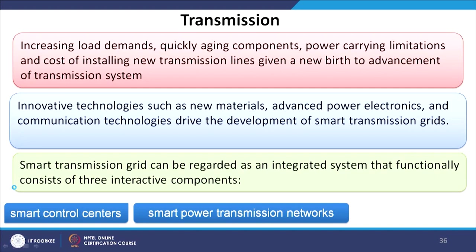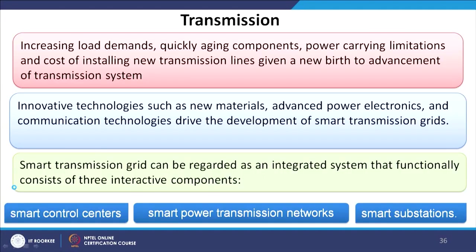A smart transmission grid can be regarded as an integrated system that functionally consists of three interactive components: smart control centers, smart power transmission networks, and smart substations. Upgrading the existing transmission system by establishing these three components can make the transmission system reasonably smart.